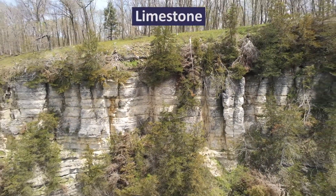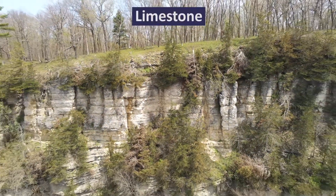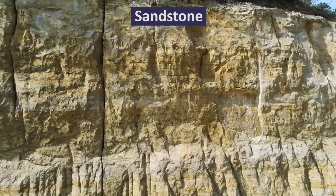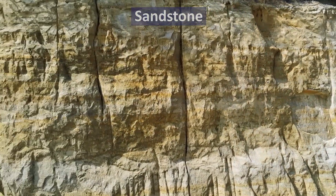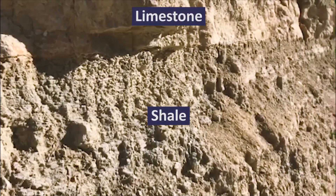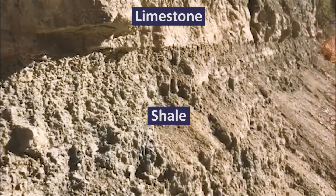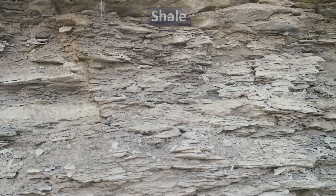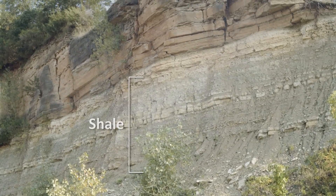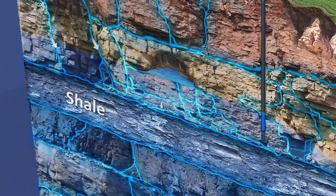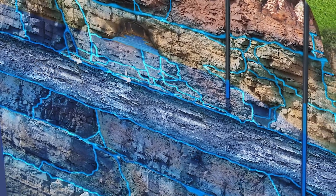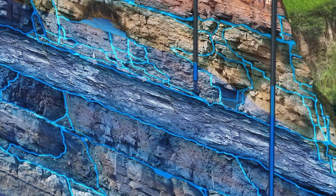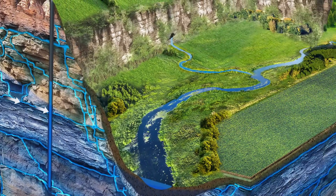Limestone rock dominates most of the upper bedrock layers across southeast Minnesota. However, layers of sandstone and shale are also present. Shale is composed of compacted layers of mud or clay that are less permeable and soluble than limestone. The presence and thickness of shale layers within the bedrock affects the speed and direction of groundwater movement. Compacted shale layers act like a barrier, slowing but not completely stopping the downward movement of water, and the presence of shale redirects groundwater to move sideways, where it can emerge as a spring.